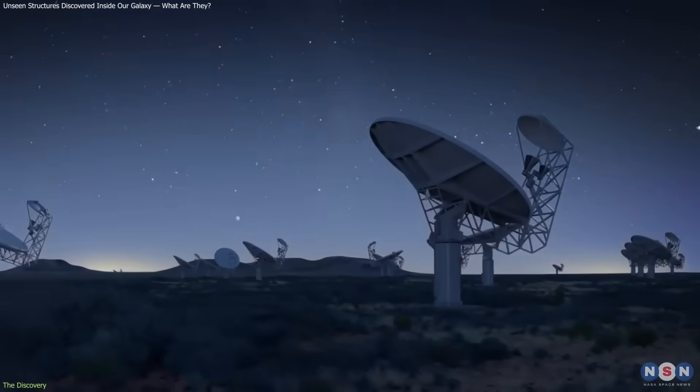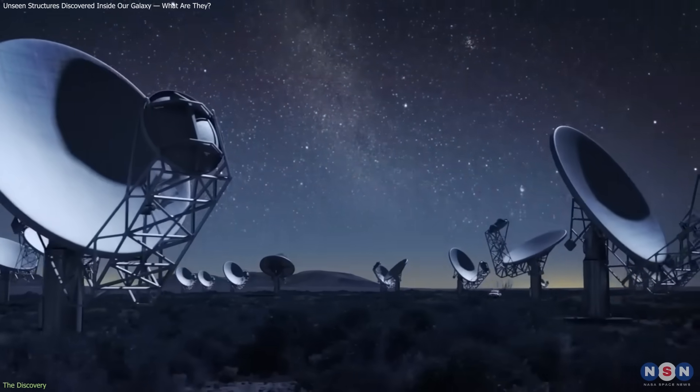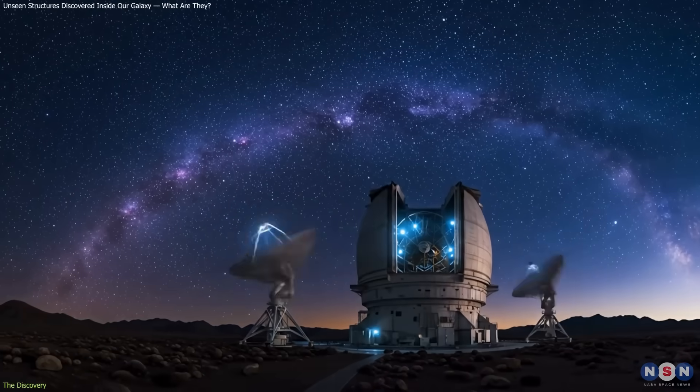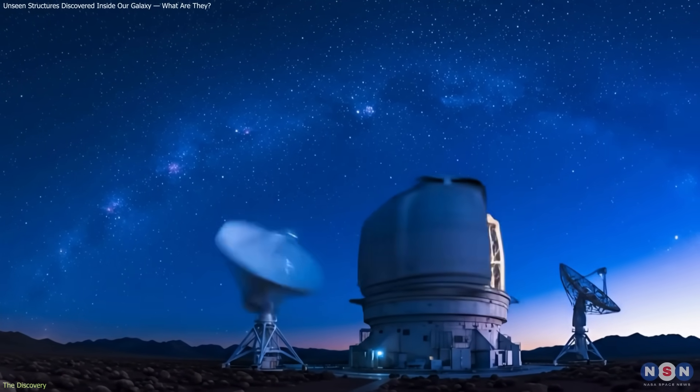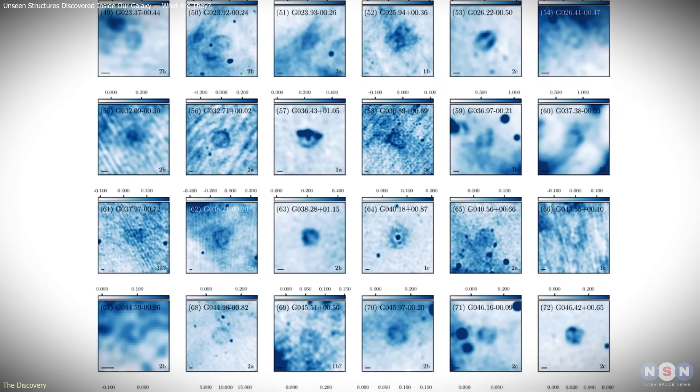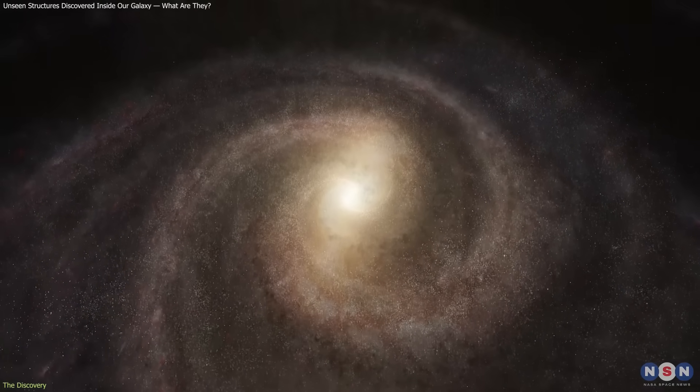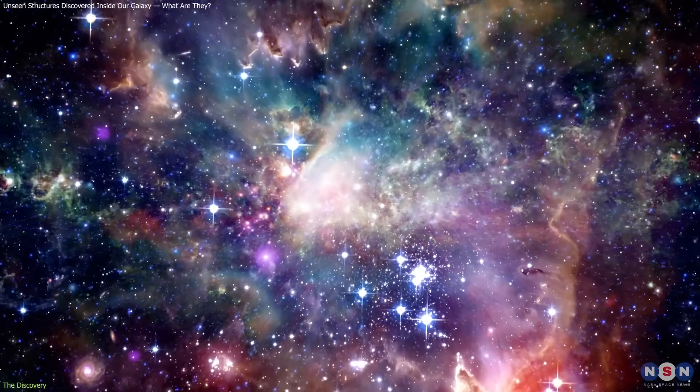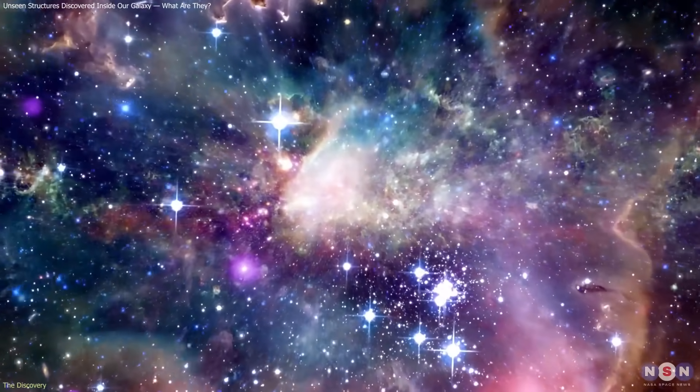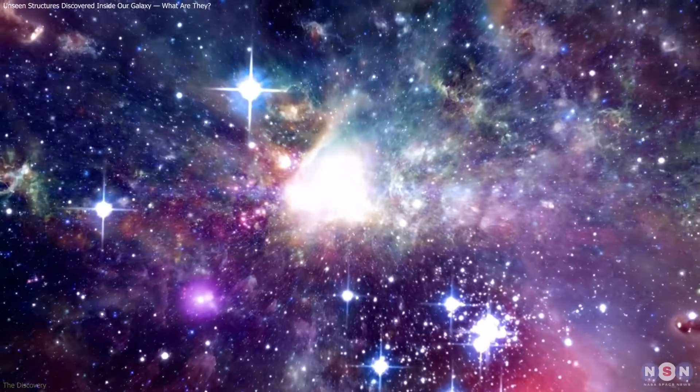Meerkat's sensitivity and resolution were the turning point. Previous surveys lacked the power to detect such faint, compact structures. By mapping these hidden objects, astronomers have uncovered a previously unseen layer of galactic structure, one that could reshape how we understand stellar evolution and the interstellar medium.